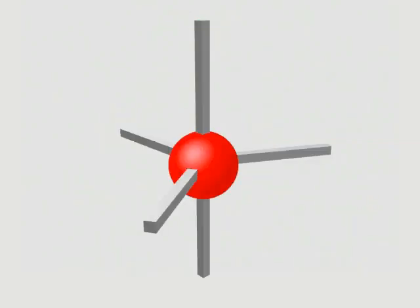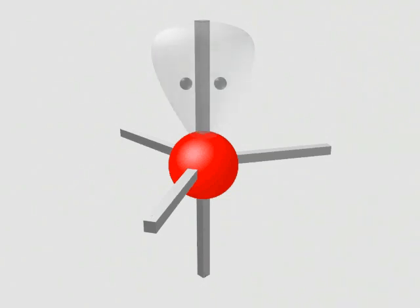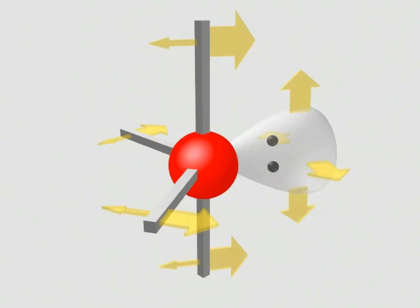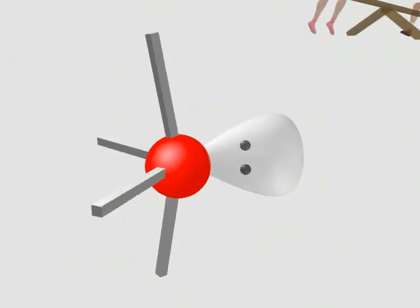Once again, when lone pairs are present, different shapes result. But a lone pair in an axial position creates three strong 90-degree axial equatorial repulsions, whereas a lone pair in an equatorial position creates only two 90-degree repulsions. Therefore, to minimize the number of 90-degree repulsions, lone pairs always occupy equatorial positions. As before, lone pair repulsions reduce all other bond angles.